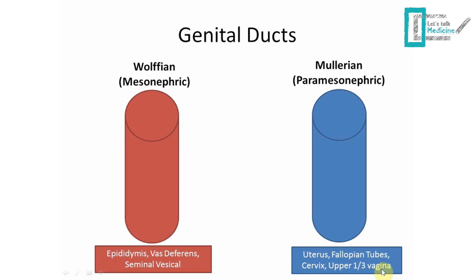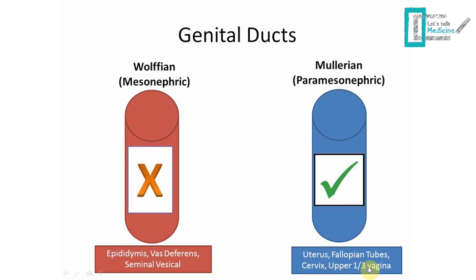In situations where there is no hormonal input, the Müllerian duct is going to survive and give us the uterus, fallopian tubes, cervix, and upper one-third of the vagina, while the Wolffian duct will regress — no more epididymis, vas deferens, or seminal vesicles. This is what happens in normal physiology in females: no hormonal input, so the Müllerian duct persists.